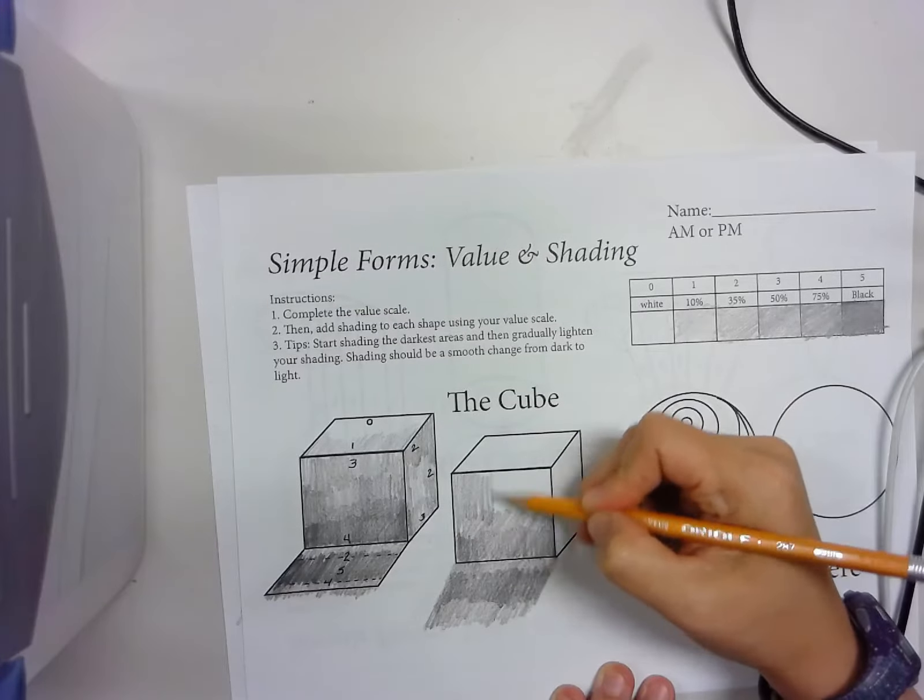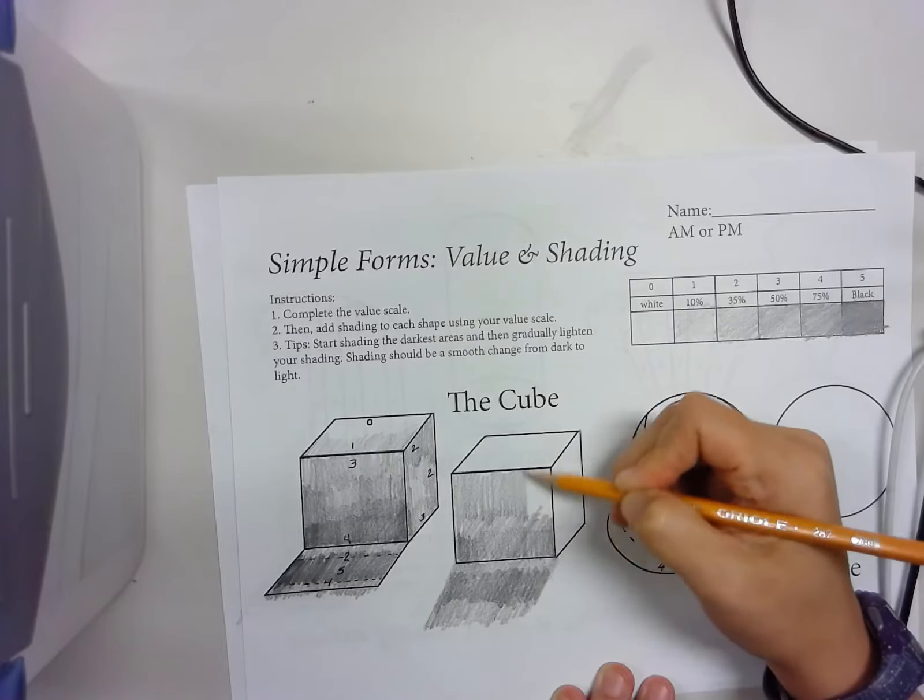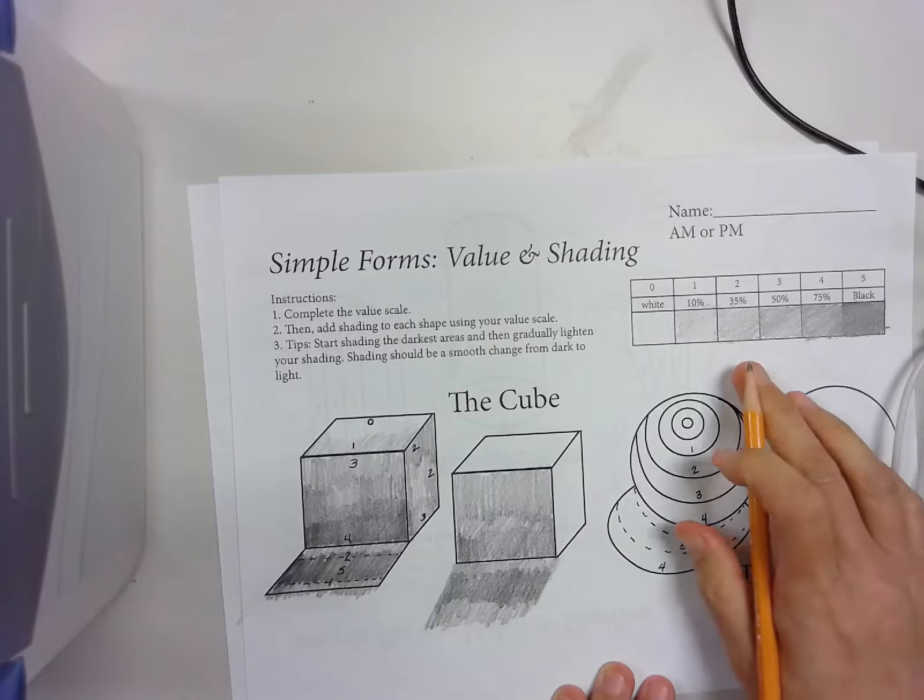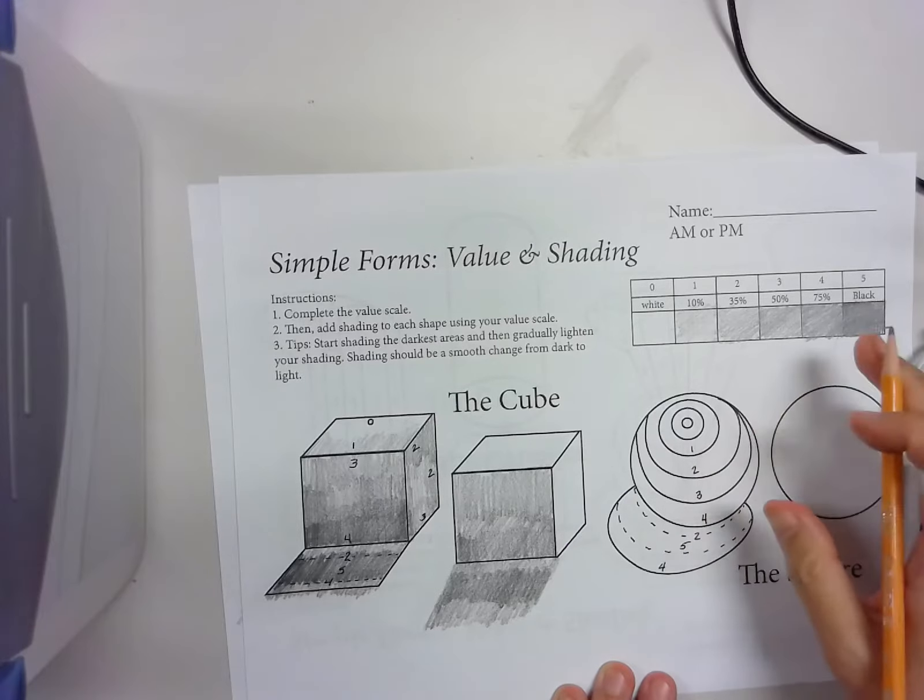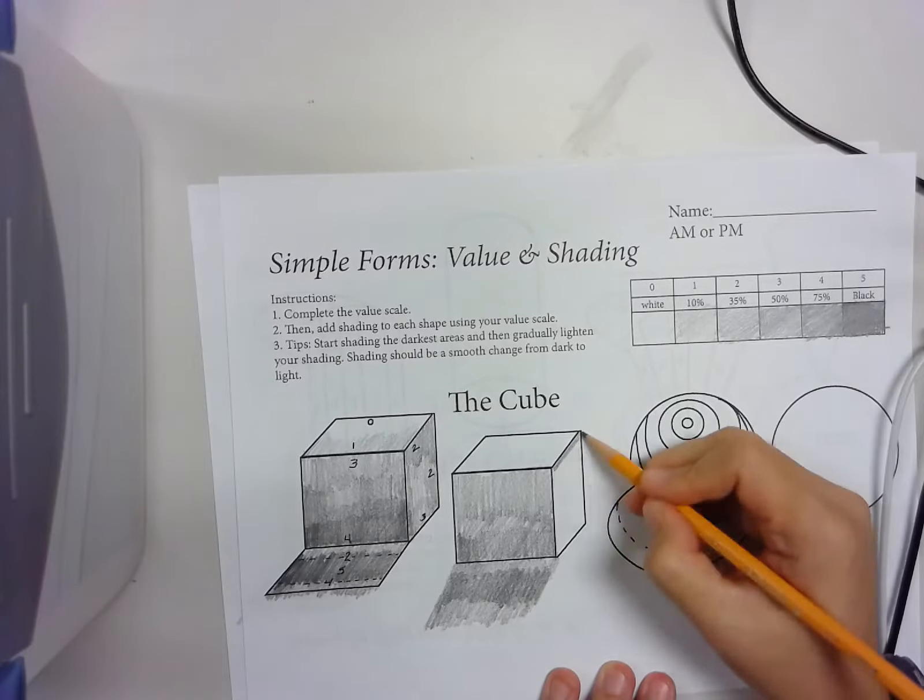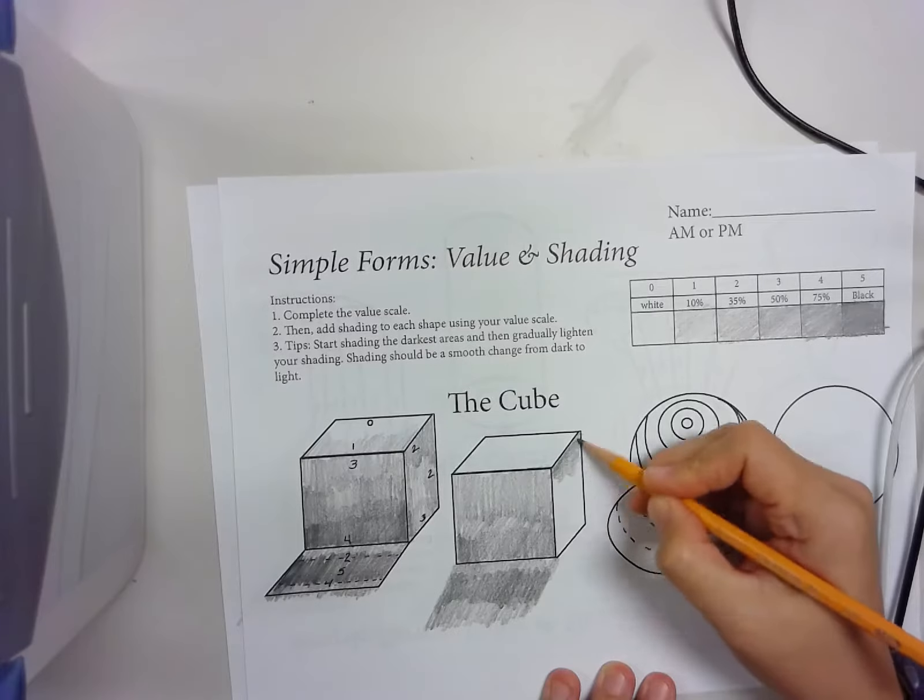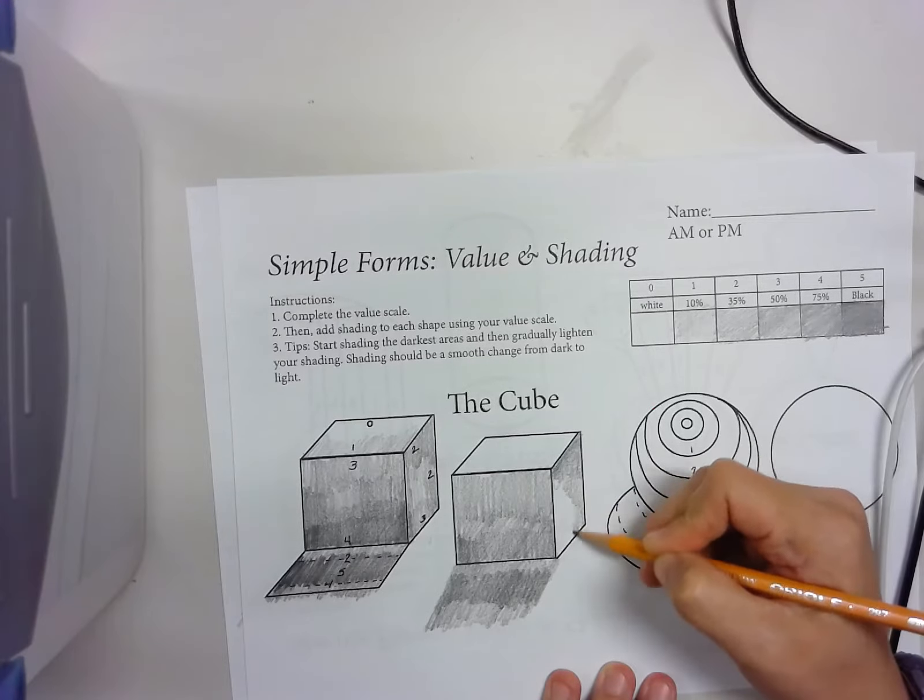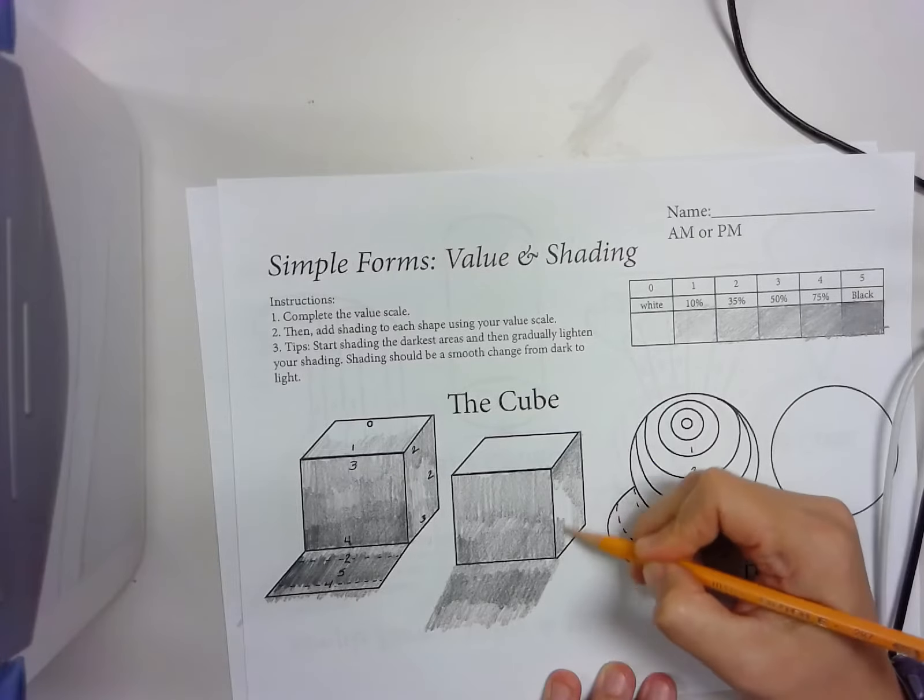3. 3 is 50%. I want it to look gradually smooth. And then here, 2 and 3. So it's a combination of 2. Then it's darker down here.